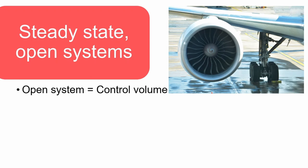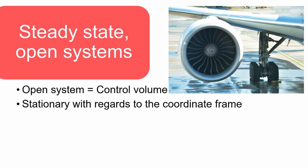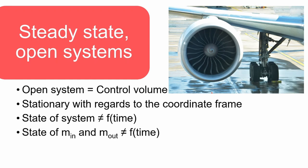Let's consider the turbine engine of an aeroplane. Sometime after the plane has achieved cruising altitude, the operating conditions of the engine will remain fairly constant and remain so for the duration of the flight, which can last several hours. Our system — in this case the aircraft engine — comprises a specific region in space and can therefore be seen as an open system, which can also be called a control volume. For steady state open systems we assume the following: our coordinate frame moves with the airplane and therefore the control volume is stationary with regards to the coordinate frame. The temperatures and pressures inside the engine remain constant over time.